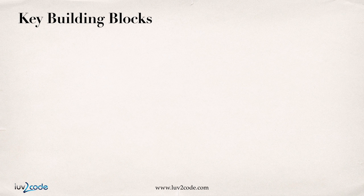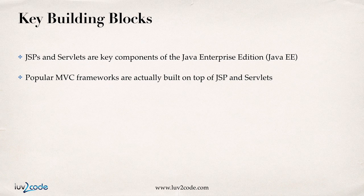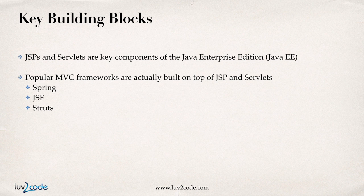JSP and Servlets are the key components of the Java Enterprise Edition. They're the most popular pieces of technology — the bread and butter — because a lot of popular MVC frameworks actually use JSP and Servlets. For example, Spring, JSF, and Struts all use JSP and Servlets at the low level. When you're using these technologies, you may not see it directly at the high level, but behind the scenes Spring, JSF, and Struts all make use of JSP and Servlets. By understanding JSP, this will help you when you move forward and use some of those frameworks later on in your career.